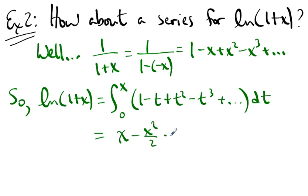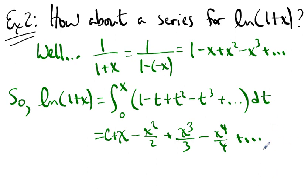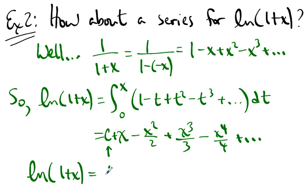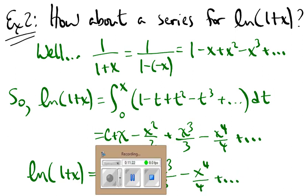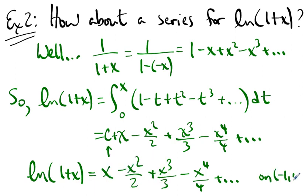We take the antiderivative term by term, substitute in x, substitute in zero and subtract. There's a constant in the front, but we know that the natural log of one is zero, so substituting zero gives zero, meaning the constant is zero. Therefore the natural log of one plus x equals x minus x squared over two plus x cubed over three minus x to the fourth over four and so on — and this only holds on negative one to one, the interval of convergence.